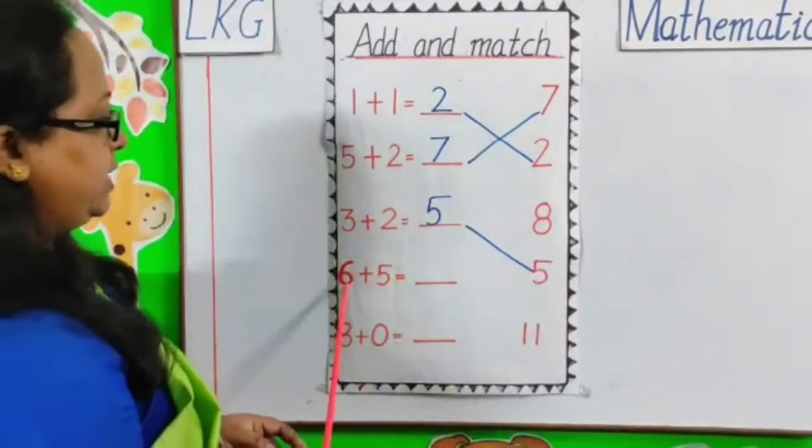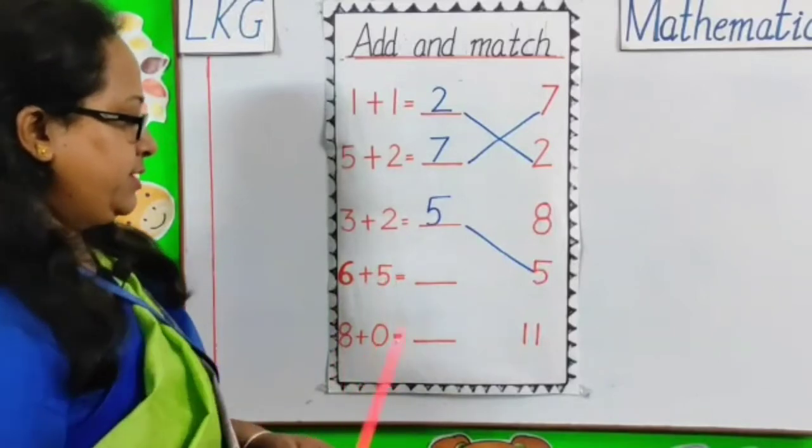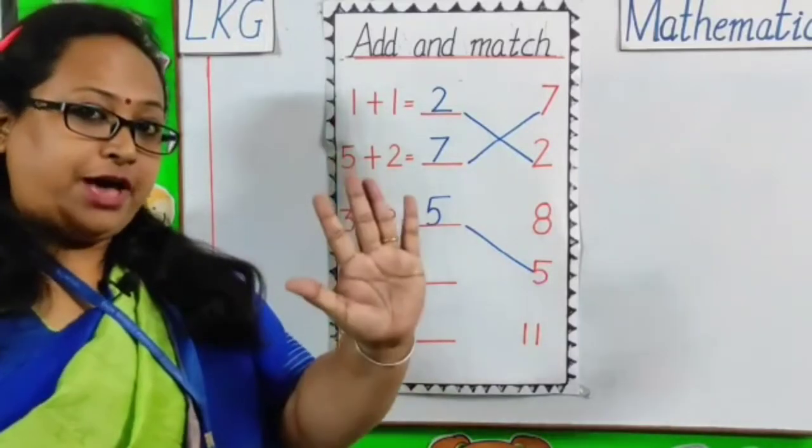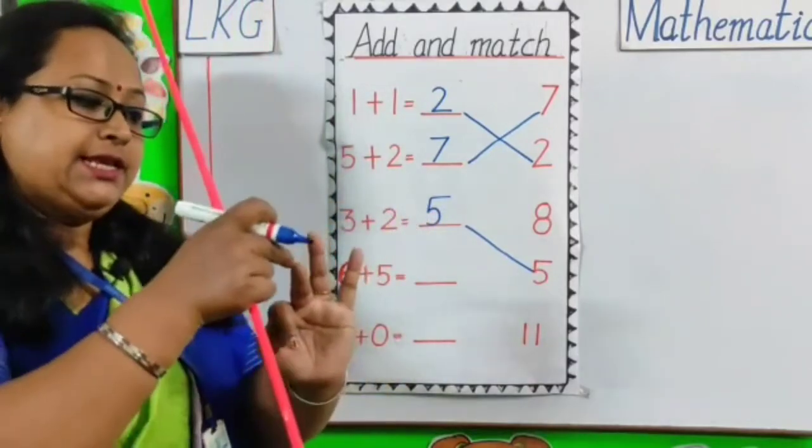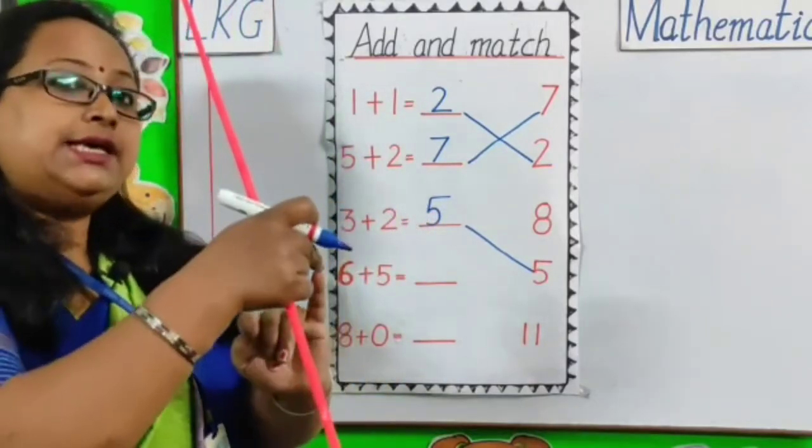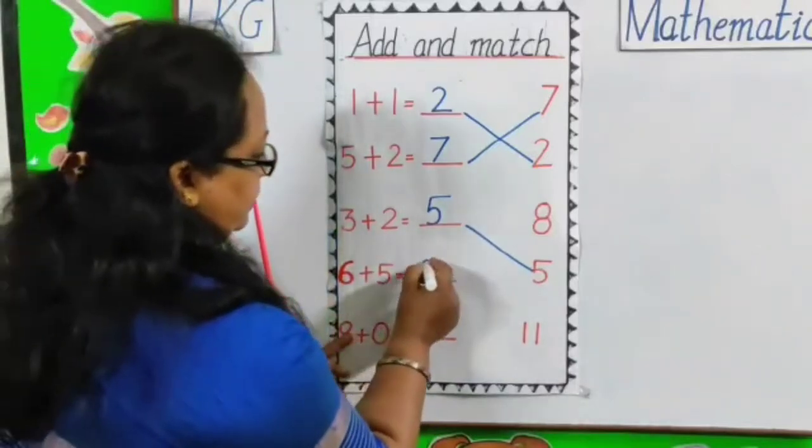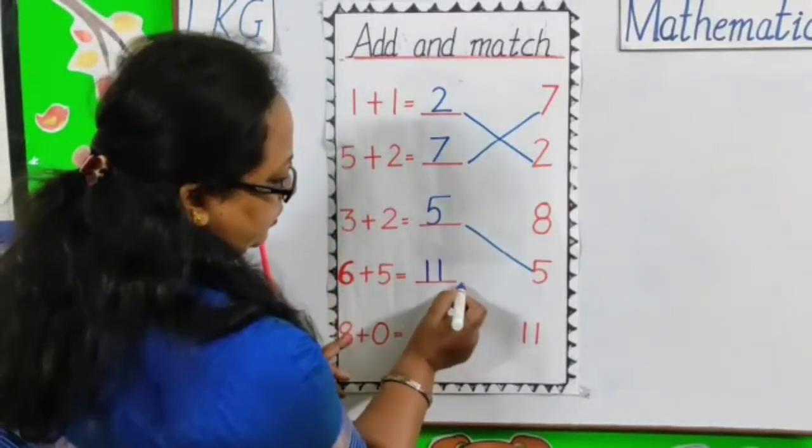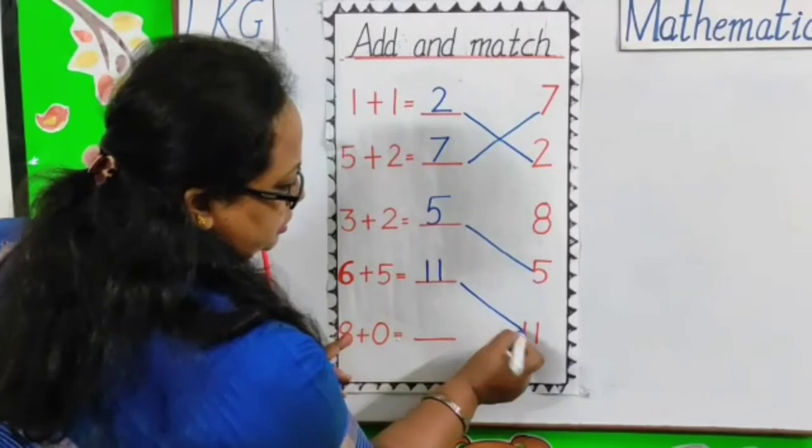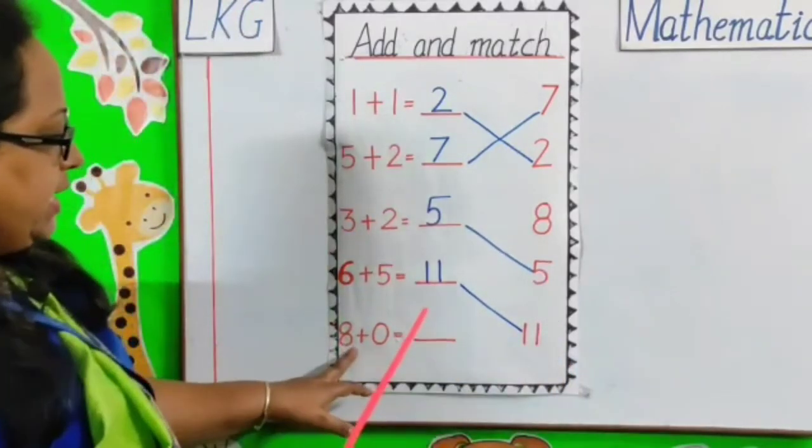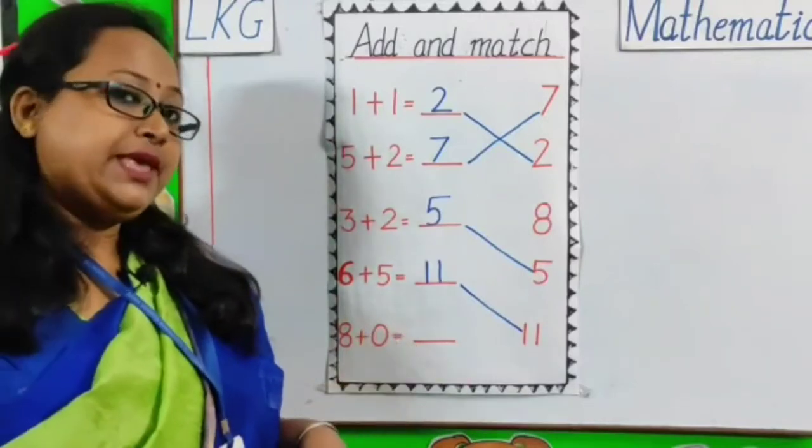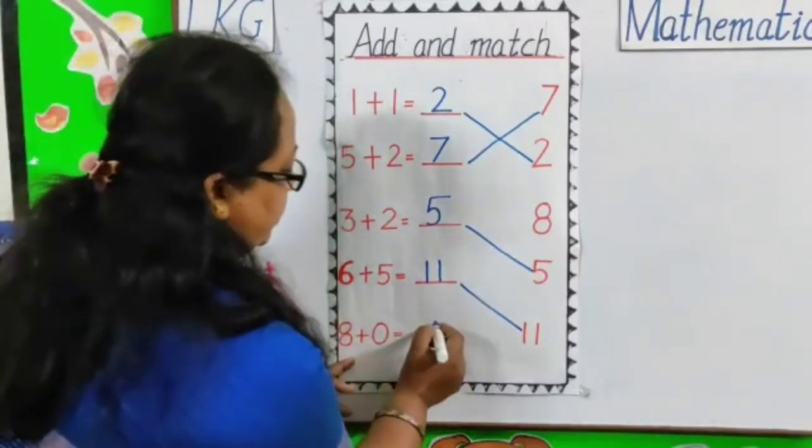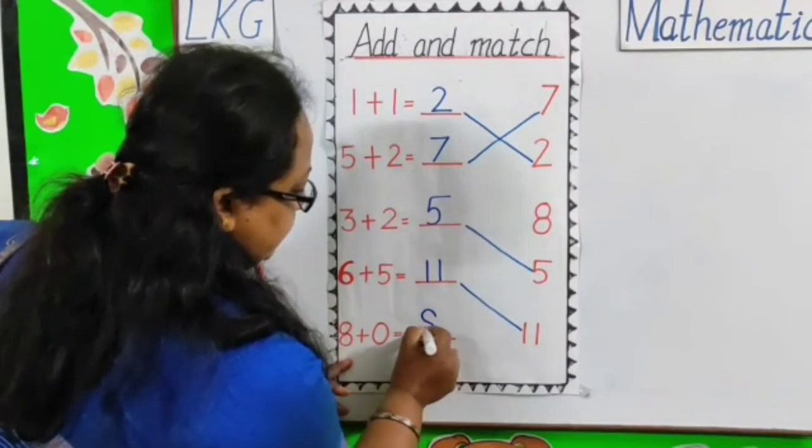Next. 6 plus 5. 6 plus 5. After 6, 7, 8, 9, 10 and 11. We will match to 11. 8 plus 0. 8 plus 0. 8. 8 plus 0 is 8.